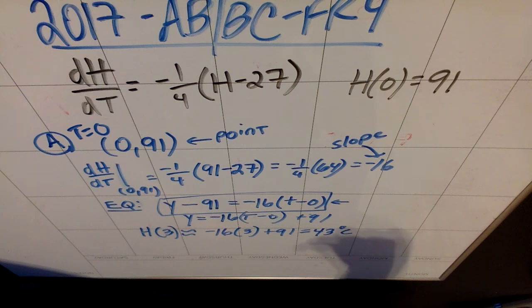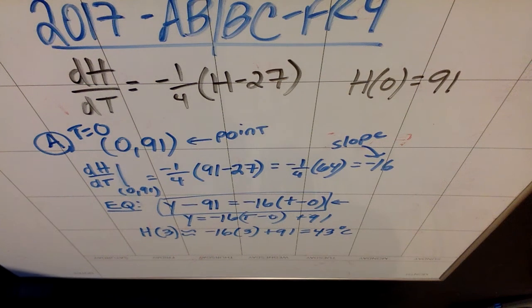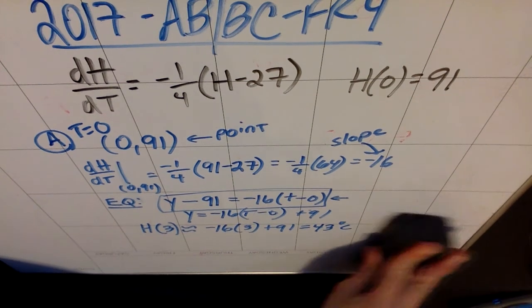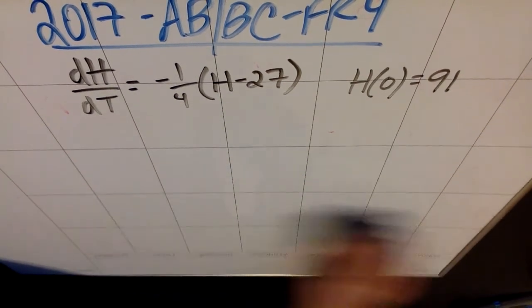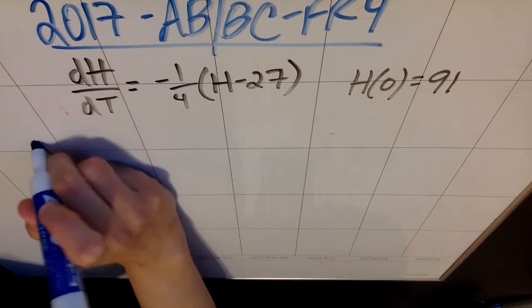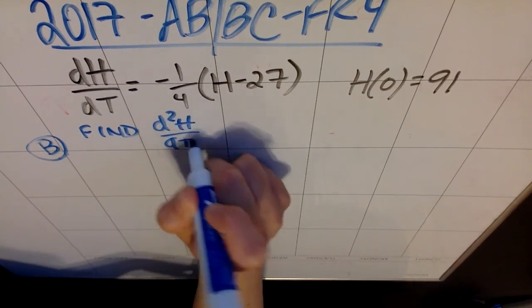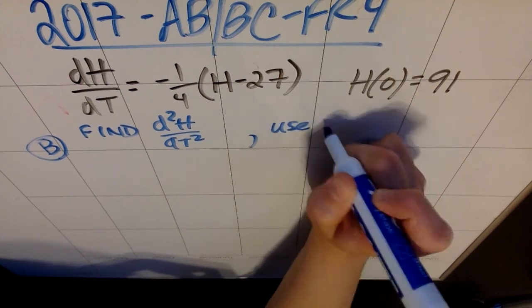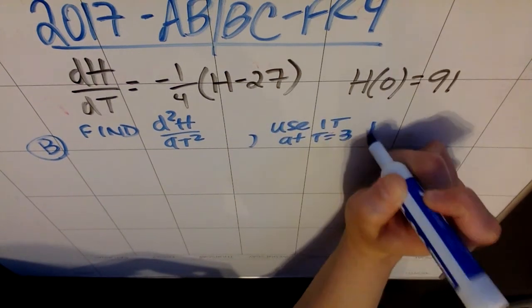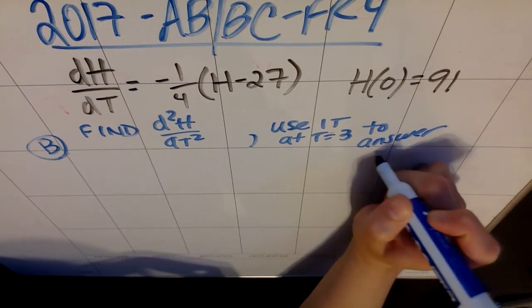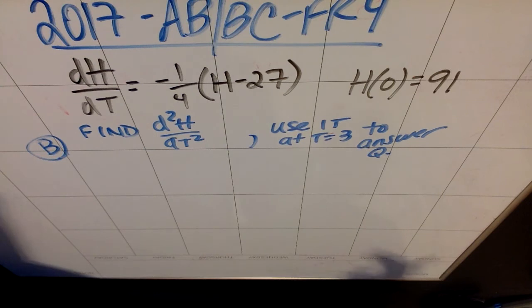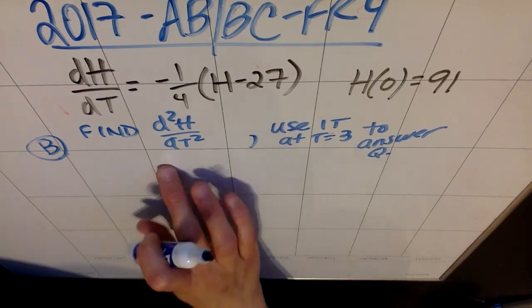Part B: use d²H/dt² to determine whether your answer to part A is an underestimate or an overestimate to the initial temperature. If they tell you to use d²H/dt², the first thing you have to do is find it, and that's going to be worth some points. They're secretly asking you to do two things in Part B: find d²H/dt², and then use it at t equals 3 to answer a question. You have to do both of those things. You can't possibly do this piece until you've done this, so you might as well find the derivative.